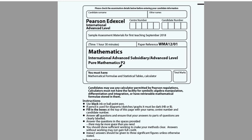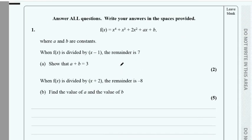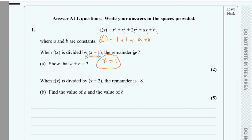This is the P2 sample assessment paper. For number one, f(x) is divided and the remainder is given. From here you get x equals 1, so you find f(1) by replacing x with 1. The remainder is 7, so f(1) equals 7, giving you the first equation.